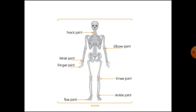Elbow and knee joints help us move our arms and legs. Wrist and ankle joints help us move our hands and feet. Finger and toe joints help us grip things.